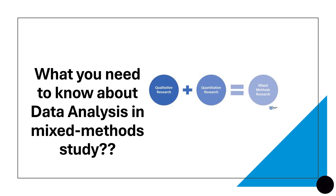Mixed methods research combines elements of two types of research: qualitative and quantitative. Quantitative data is collected through surveys and experiments, containing numerical measures such as ages, scores, and percentages. Qualitative data involves non-numerical measures like beliefs, motivations, attitudes, and experiences, often derived through interviews and focus groups.